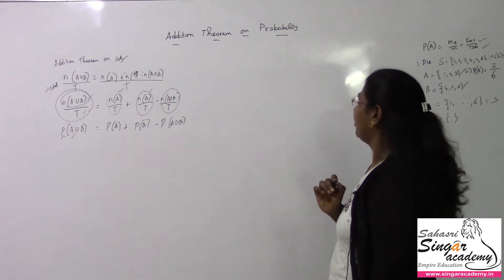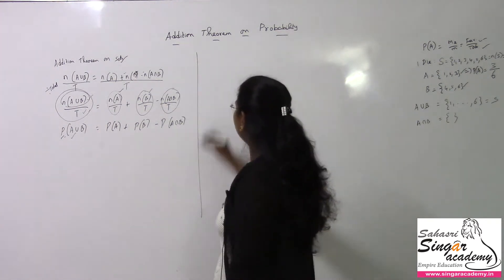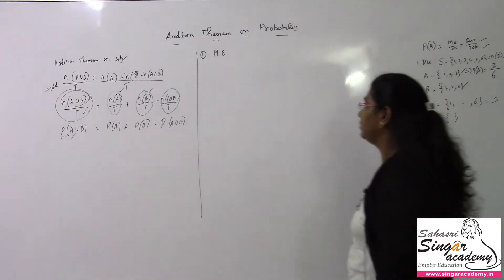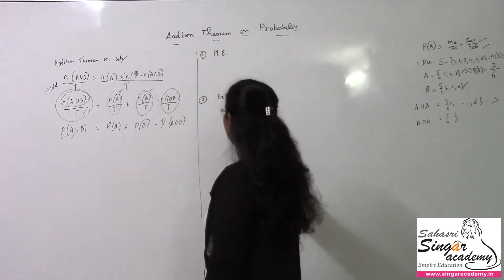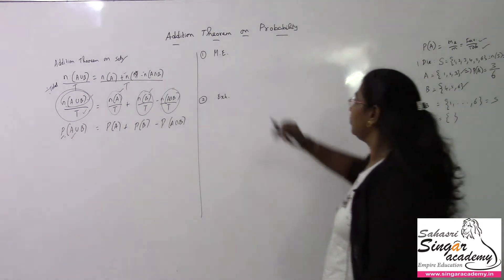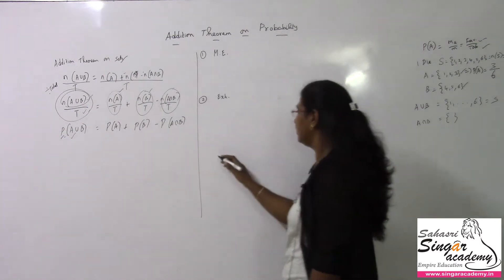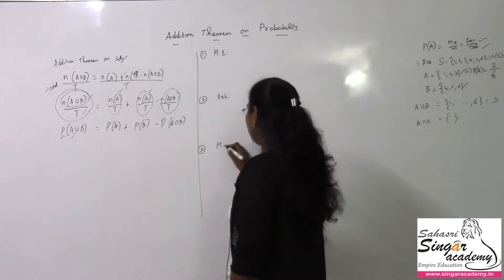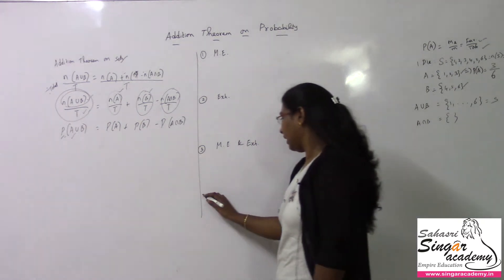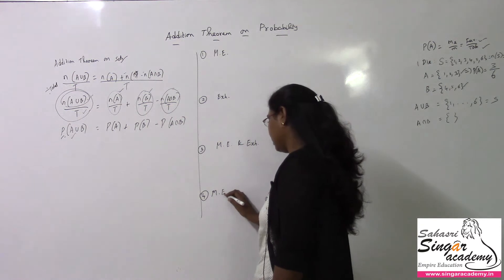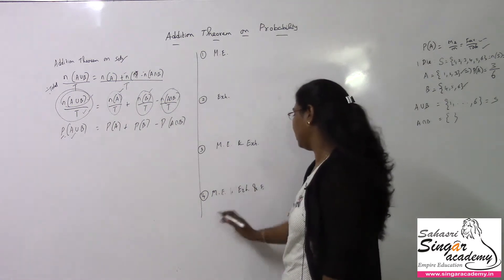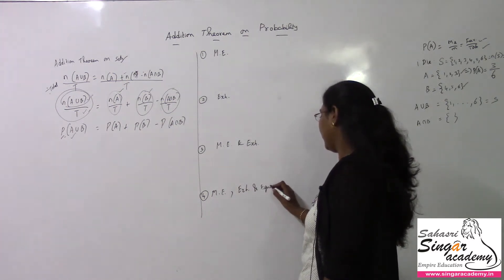In the addition theorem on probability, let us discuss some cases. First case: A and B are mutually exclusive. Second case: A and B are exhaustive. Third case: mutually exclusive and exhaustive. Fourth case: mutually exclusive, exhaustive, and also equally likely — or equiprobable.